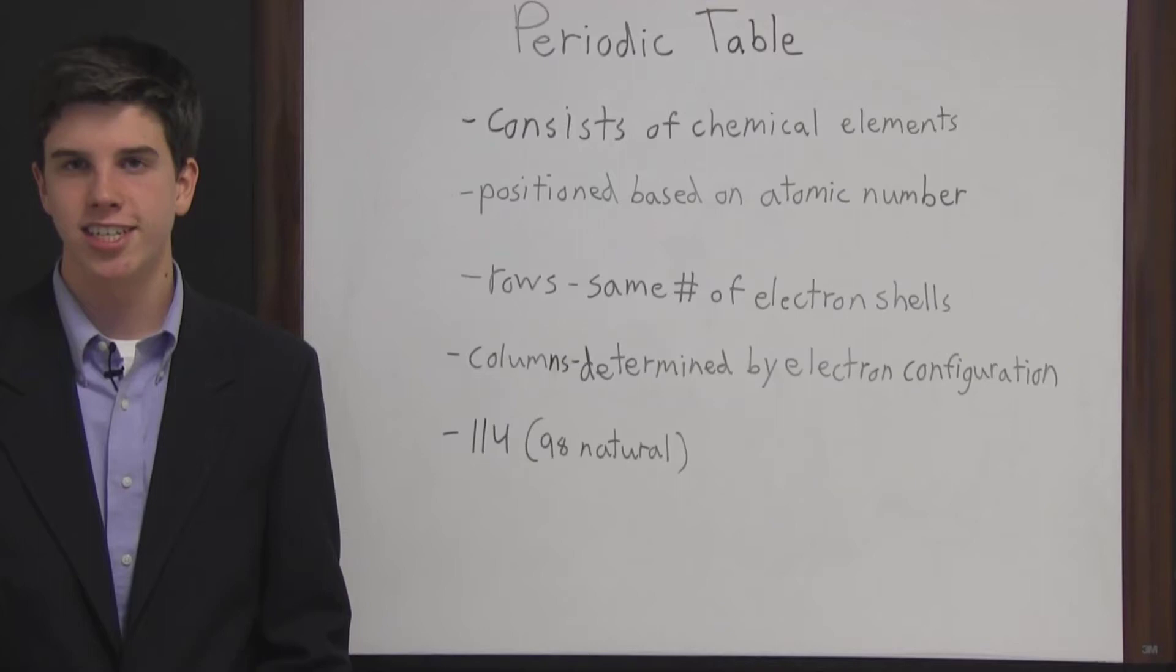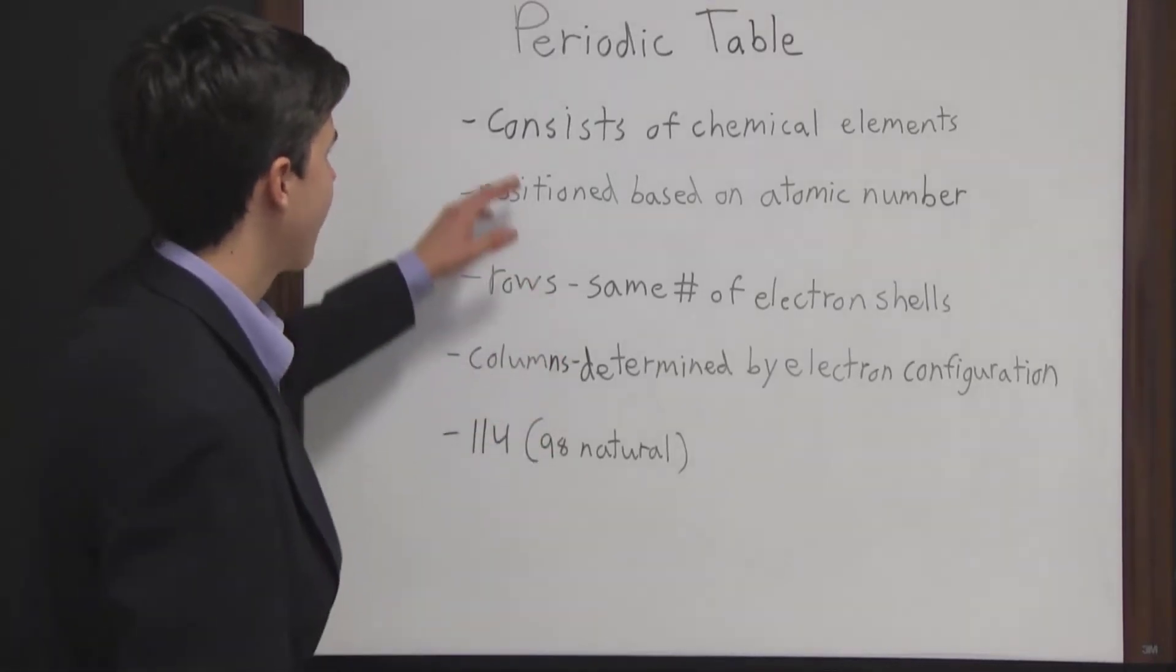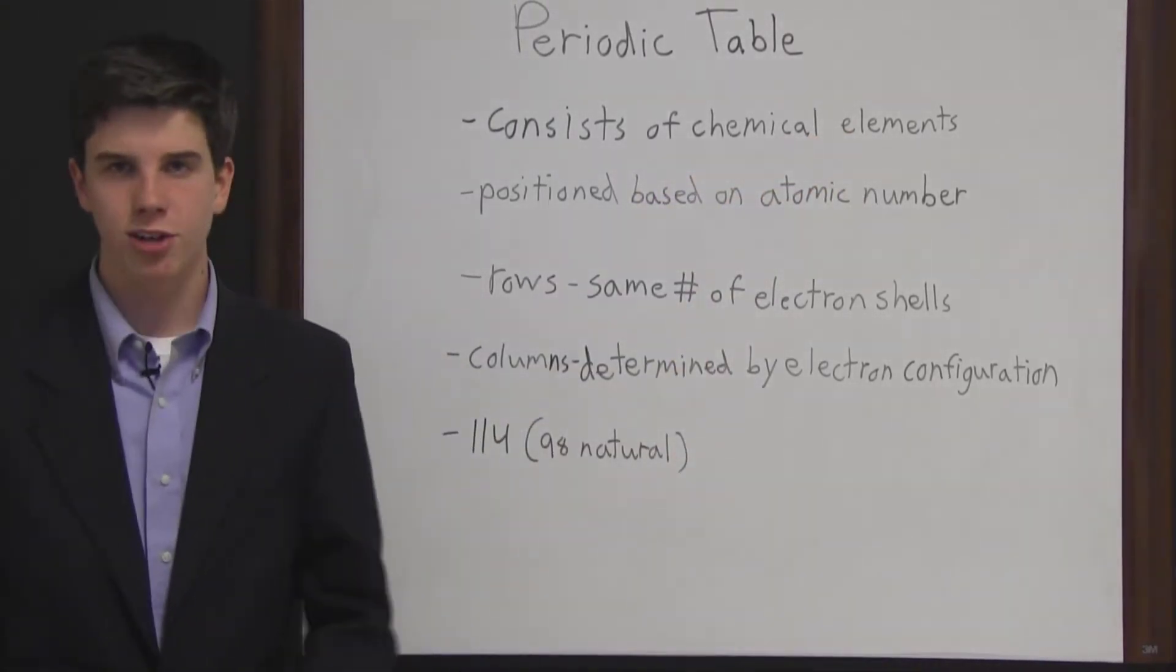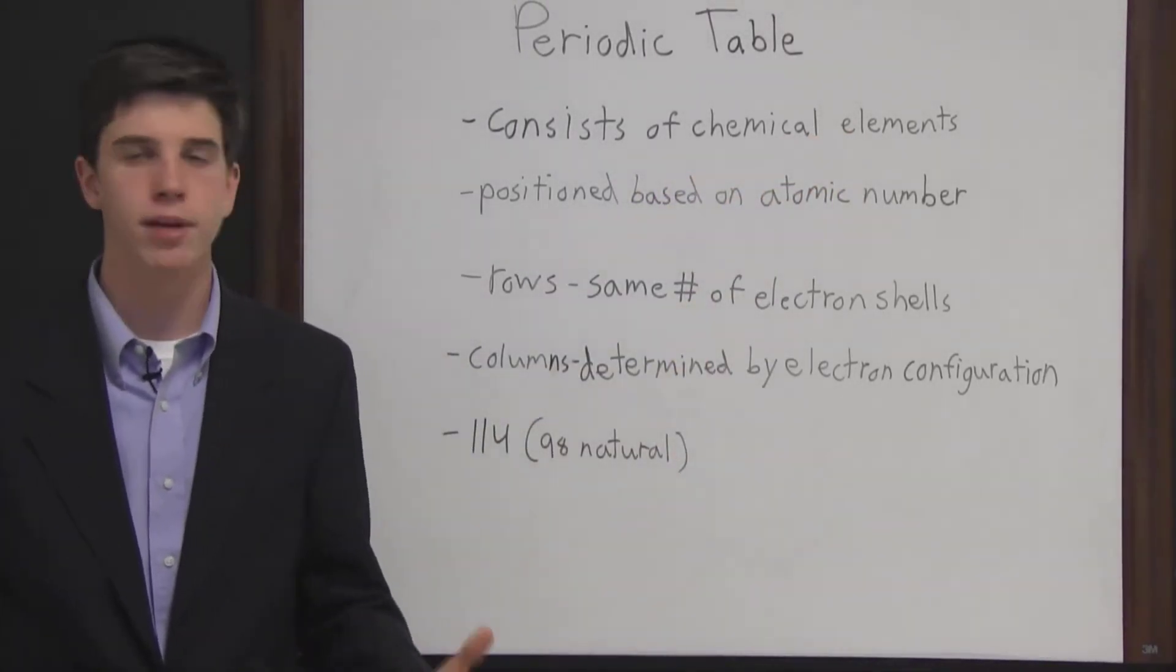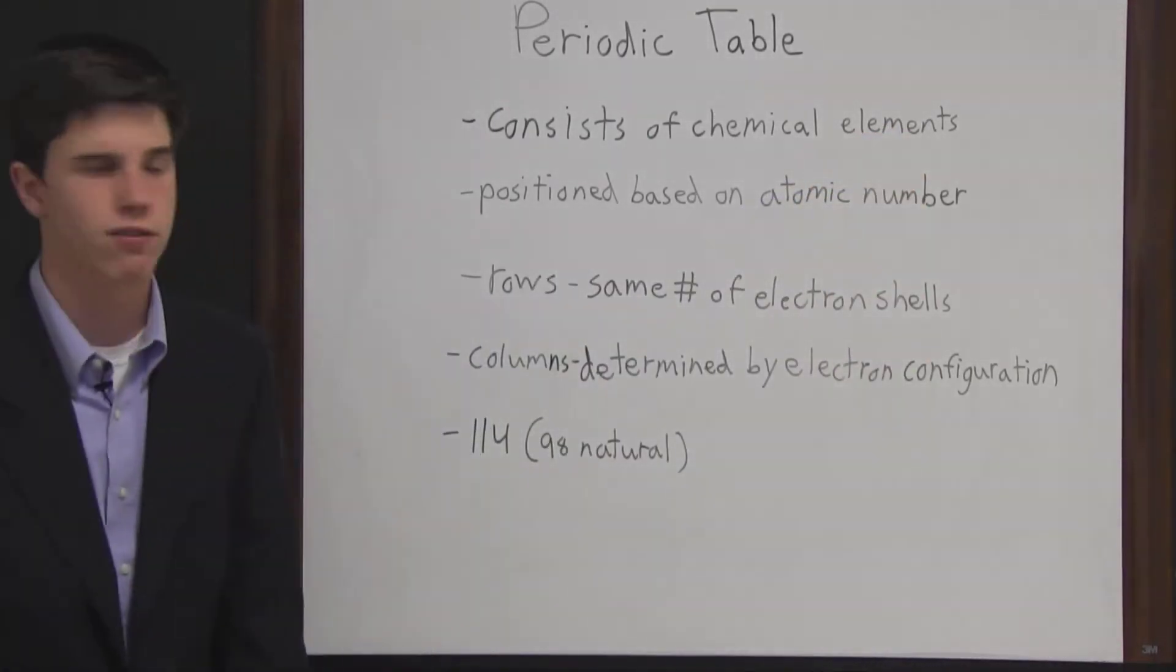The periodic table is a way to systematically display the chemical elements. It consists of chemical elements and elements only. This does not include mixtures and compounds because an element is basically matter in its most basic form.